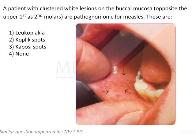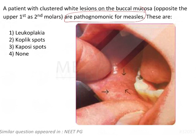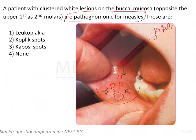A patient with clustered white lesions on the buccal mucosa opposite the first and second molars — these are pathognomonic for measles. You get all the information required for this question from those three words only: pathognomonic for measles. The arrows are showing certain grayish papules and some erythematous papules, and these small sandpapery lesions are known as Koplik's spots, which are pathognomonic for measles.